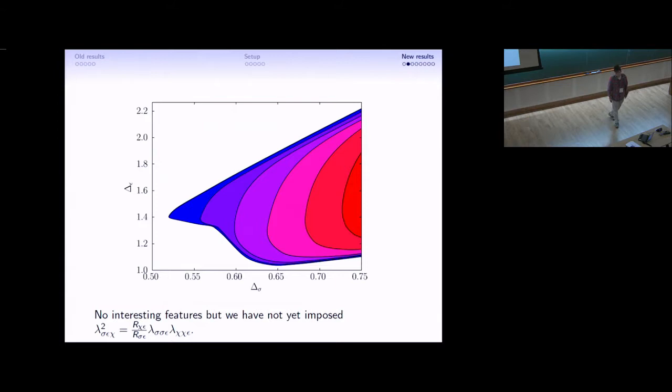This reflects an interesting piece of lore in the bootstrap, which I think is not fully understood. Every time you add new correlators to your system, that only helps you if you use them to make spectral assumptions that you couldn't make with the old system. So far, just demanding crossing symmetry and unitarity, it doesn't matter that we've included chi and used six correlators. We get the exact same result that we would have found with three correlators.